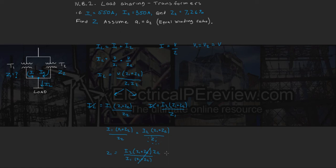And we have Z1 is going to be equal to I2 over I1 times Z2.